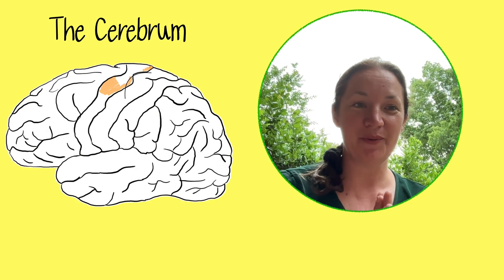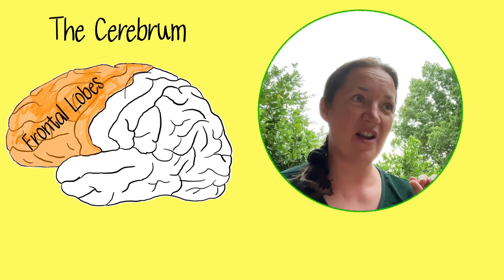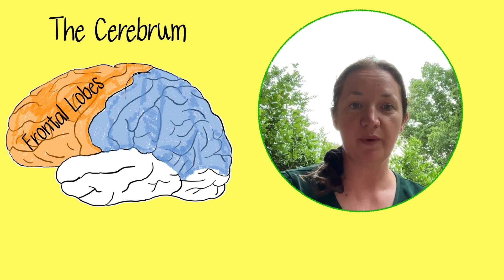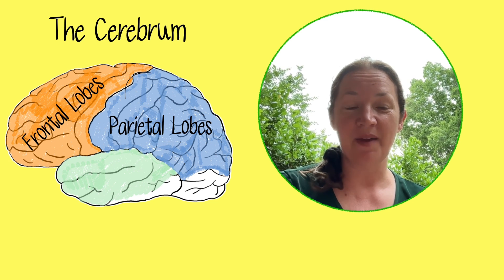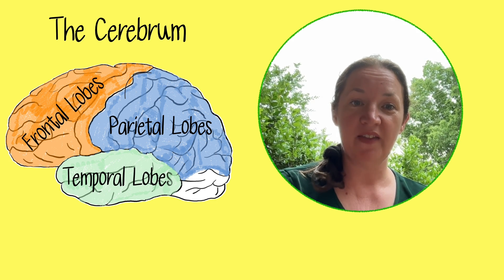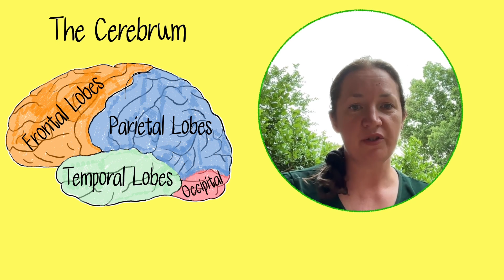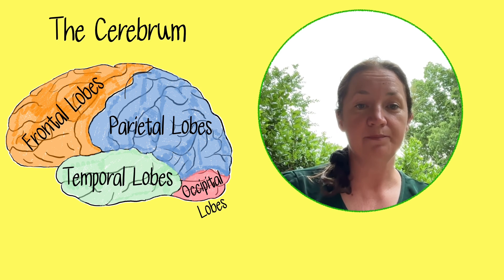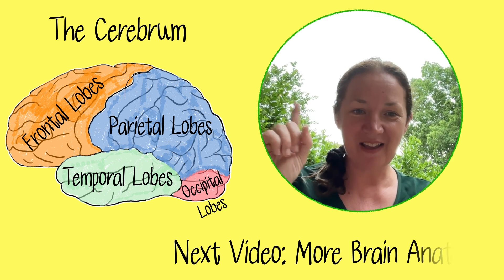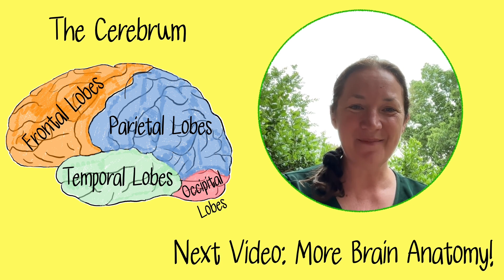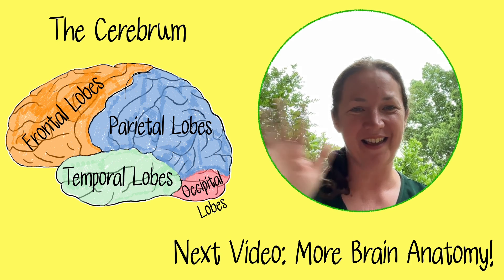So we made it through the cerebrum. We talked about the four regions of the brain, then focused in on the cerebrum and its lobes. In the next video, we're going to do more brain anatomy — I'll definitely explain the diencephalon, including the hypothalamus, and time permitting, the midbrain and the rest of the brain stem. Thanks for joining me. I'm Susanna with Science with Susanna, and I look forward to seeing you in the next video.